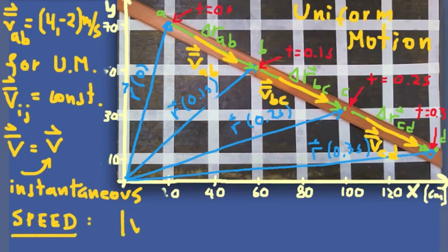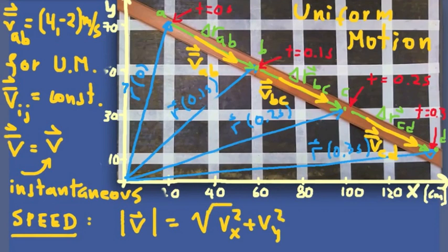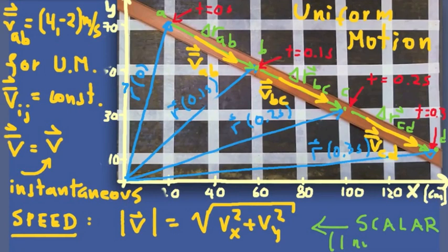Speed can be defined in two or three dimensions as the magnitude of the velocity vector. You take the x-component squared plus the y-component squared — and the z-component squared if present — and take the square root. That number is always positive and is a scalar quantity, as opposed to velocity, which is a vector with two components in 2D or three components in 3D.